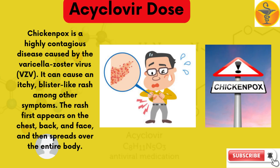Chicken pox is a highly contagious disease caused by the varicella-zoster virus. It can cause an itchy, blister-like rash among other symptoms. The rash first appears on the chest, back and face and spreads over the whole body.